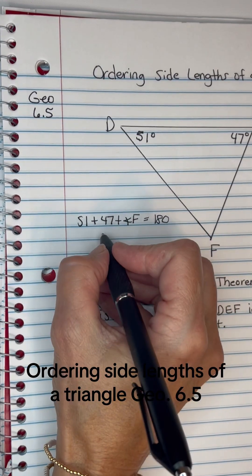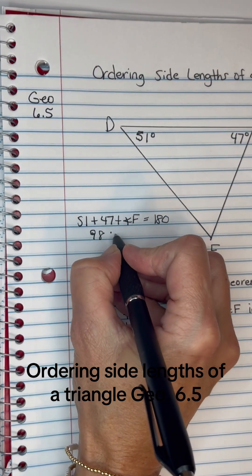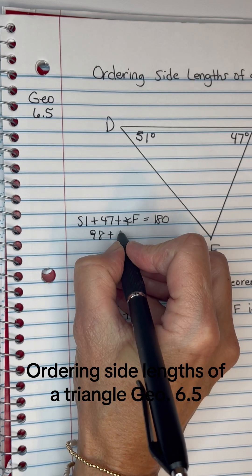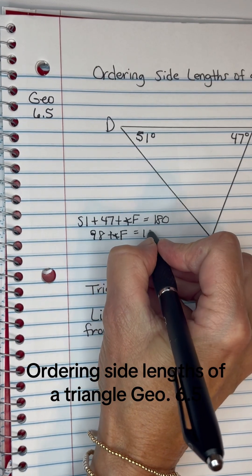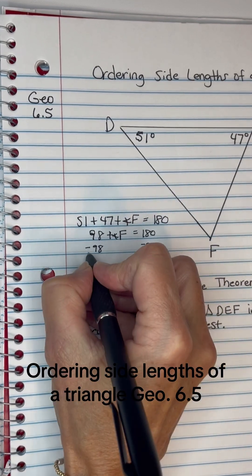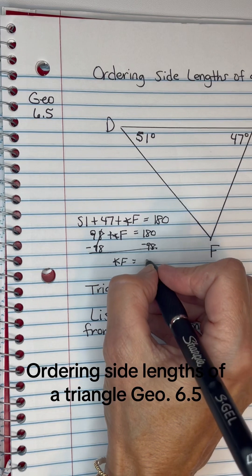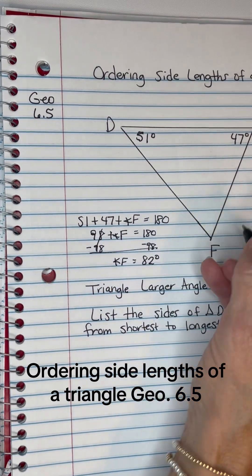If I add these two together, I get 98 plus angle F equals 180. Subtract 98 from both sides, and so angle F equals 82 degrees.